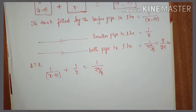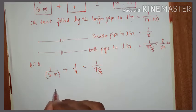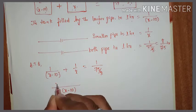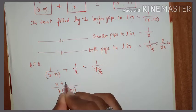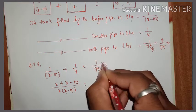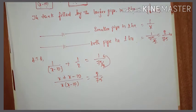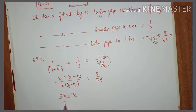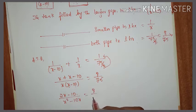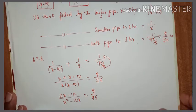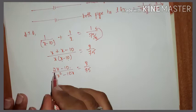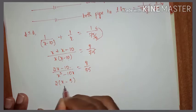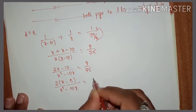Taking LCM as x(x-10): the first term gives x, the second gives x-10, so we get (x + x - 10) divided by x(x-10) equals 8 by 75. That simplifies to (2x - 10) divided by (x squared minus 10x) equals 8 by 75. We can take 2 as common: 2(x - 5) divided by (x squared minus 10x) equals 8 by 75.